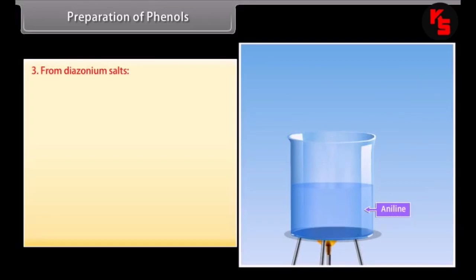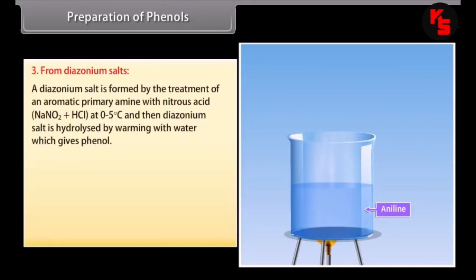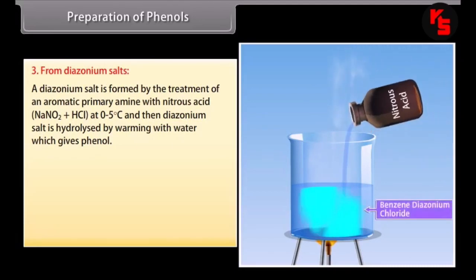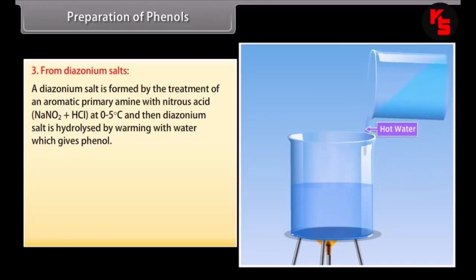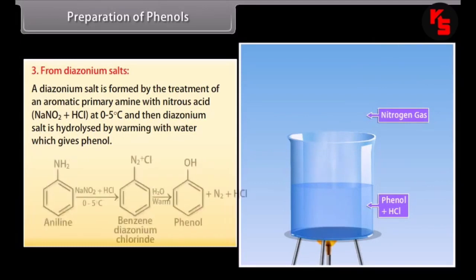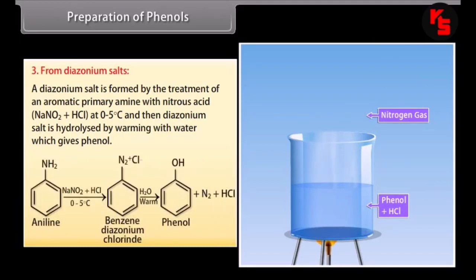From diazonium salts: a diazonium salt is formed by treating an aromatic primary amine with nitrous acid at 0–5°C. The diazonium salt is then hydrolyzed by warming with water to give phenol. Any amine treated with nitrous acid at 0–5°C forms benzene diazonium chloride, which on adding warm water gives phenol, nitrogen and hydrochloric acid.